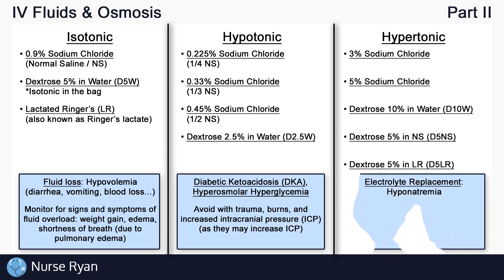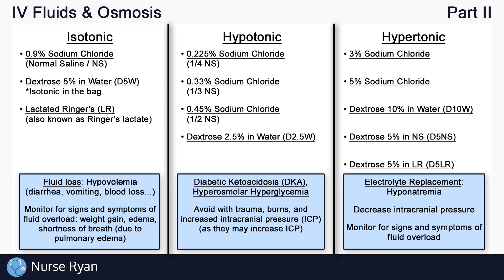Hypertonic solutions can be used as electrolyte replacement, like in hyponatremia, by drawing sodium back into the extracellular fluid. They've also been shown to help decrease intracranial pressure by removing fluid from the brain tissues. But as fluid leaves the cells and enters the extracellular space, it adds to the blood volume, so watch for signs of fluid overload here as well. Keep in mind that dextrose 5% in water is technically isotonic in the bag, but these sugars are quickly consumed by the body, leaving mostly water, which is hypotonic to our cells — so you may see D5W labeled as a hypotonic solution for this reason.